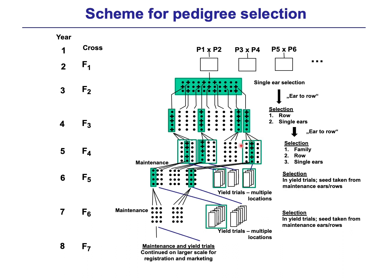We select first in the F4 generation between the different F4 families, and then in the second step we select the row we want to take, and in the third step the ears we want to take.